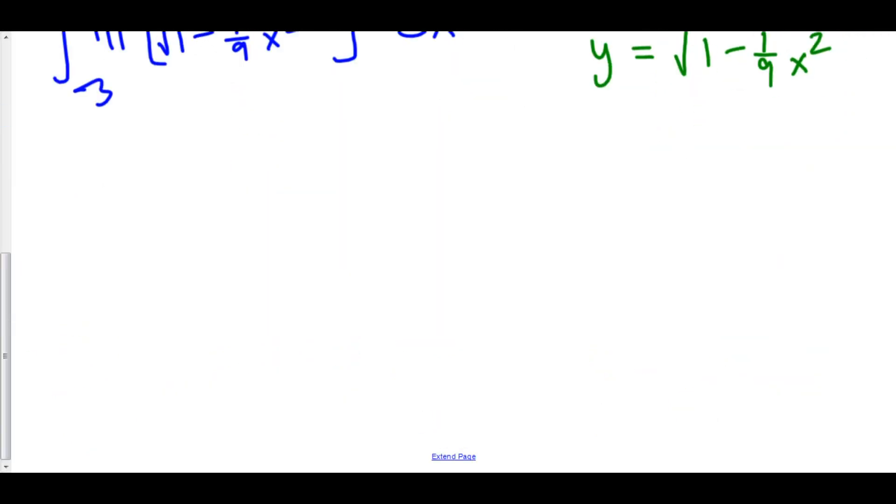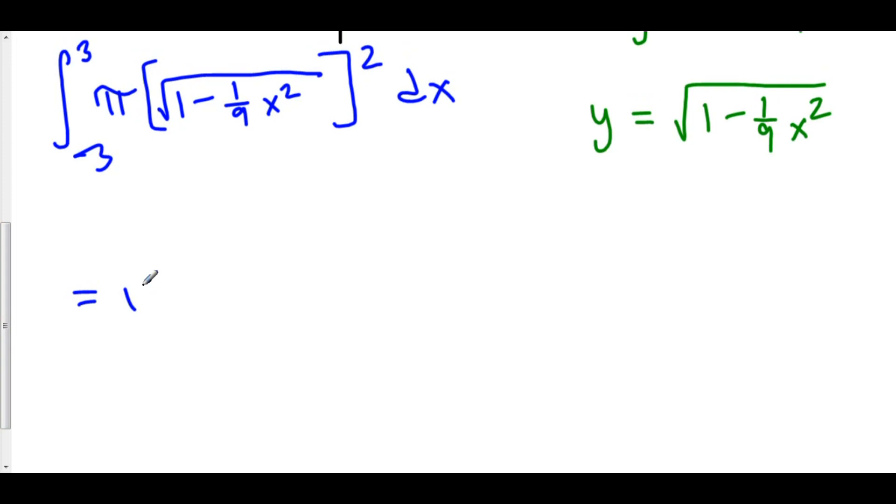With this integral, we can pull out the pi. We've got the integral from negative 3 to 3. The square root squared is just 1 minus 1 over 9 x squared, which comes out pretty nicely.